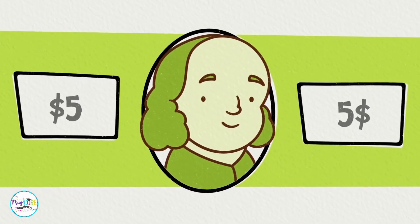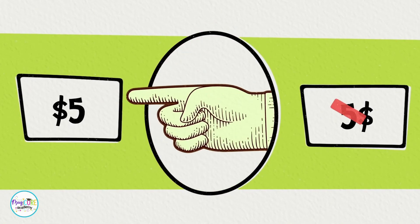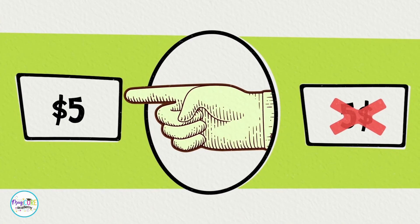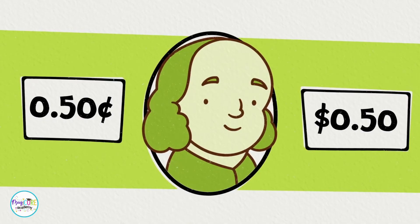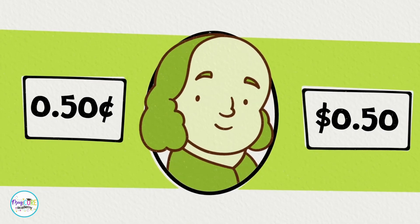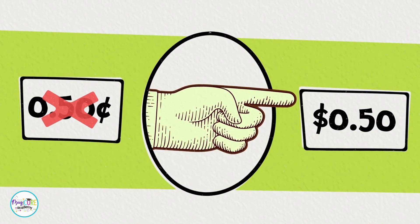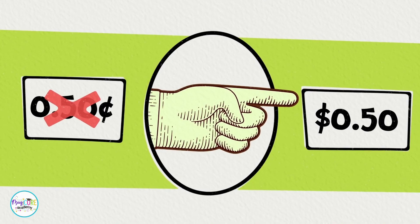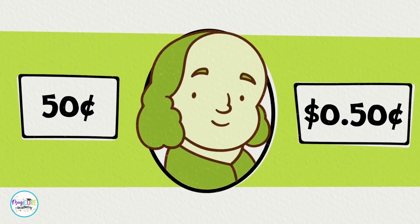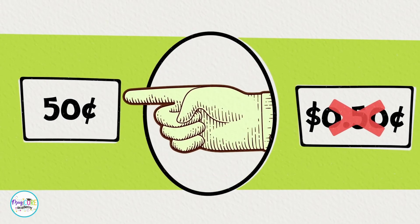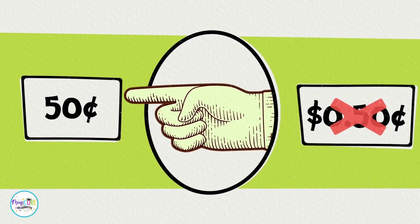Let's look at a few examples and see if you can tell the right way to write your dollars and cents. Which one is correct? This one's correct — the dollar sign always goes on the left. How about this one? Which one is correct? This is correct — remember, if you use a decimal, you use a dollar sign. Here's one more: which one is correct? This one's correct.